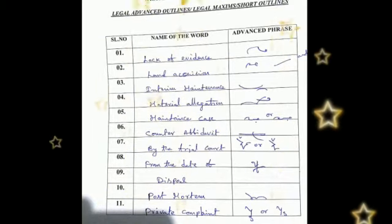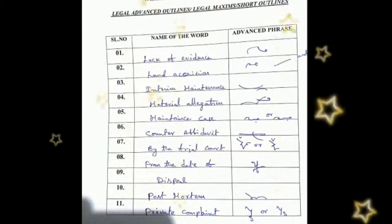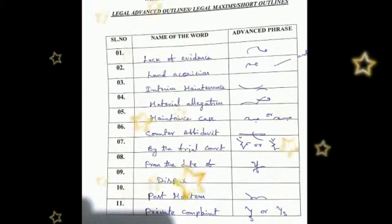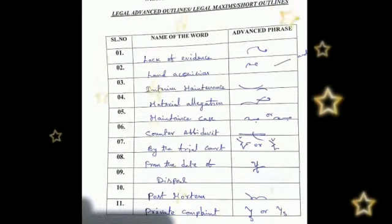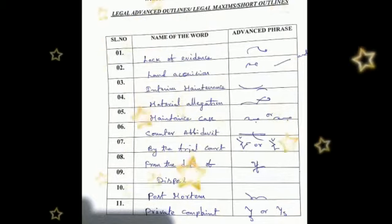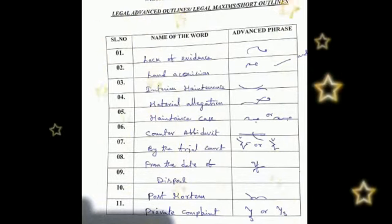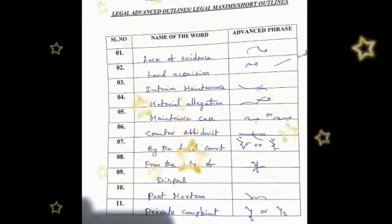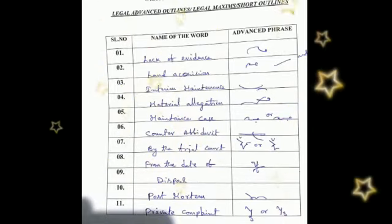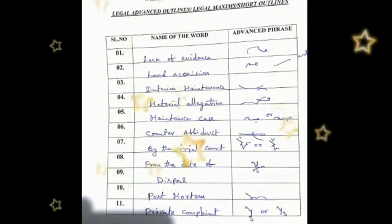The next word is 'postmortem.' The outline of the word is P-S, M in half form, and again write M in full form.